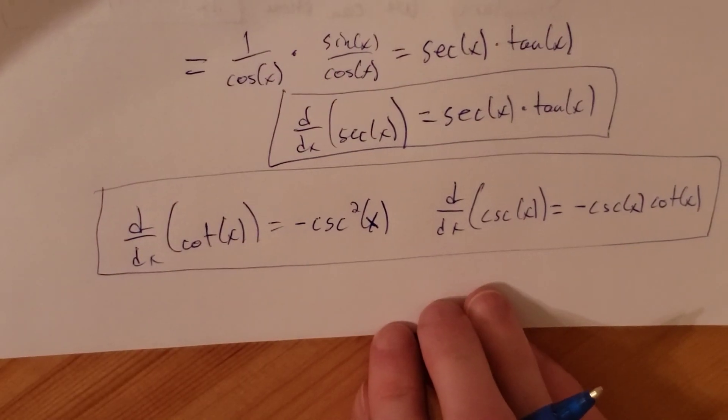The derivative of cosecant and cotangent can be found using the exact same method — converting to sines and cosines and applying the quotient rule. The derivative of cotangent of x is negative cosecant squared of x, and the derivative of cosecant of x is negative cosecant times cotangent. These round out our list of derivatives of all six trigonometric functions, and that will end this video.